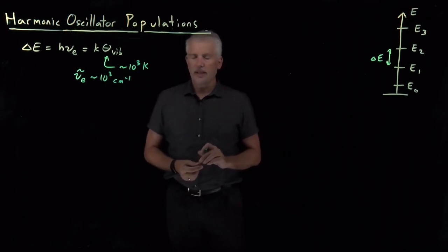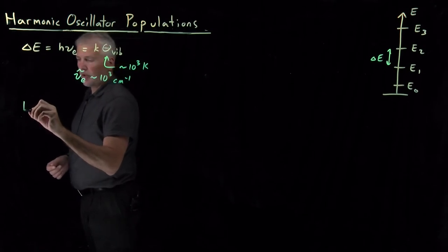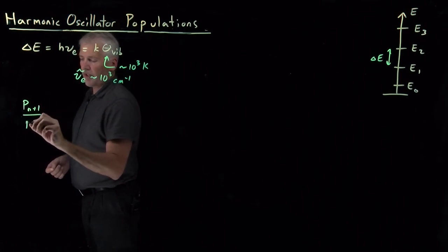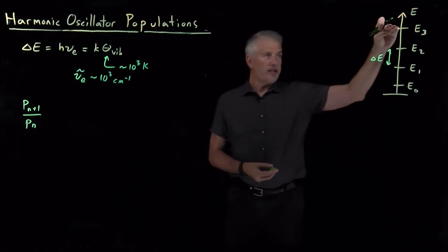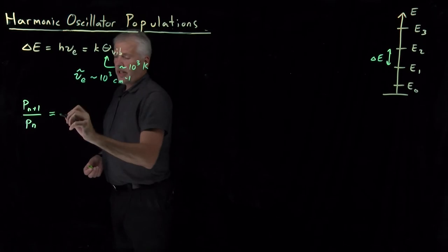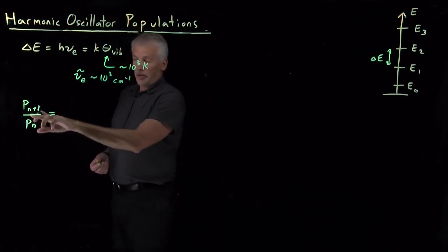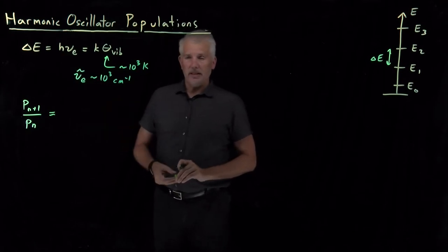If we want to answer this question of which of these states are populated or unpopulated, we would like to know, for example, what's the population of one of these energy levels relative to the one below it? How populated is E3 relative to E2 or E2 relative to E1? And it turns out that answer is going to be the same regardless of which N I'm talking about because each of these delta E's is the same.